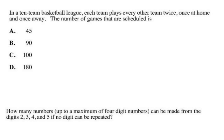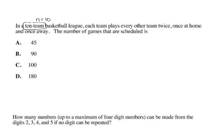A 10-team basketball league where each team plays every other team twice. How many distinct objects do we have? There are 10 teams, so N is 10. Each team plays every other team twice — once at home and once away. How many slots to fill? Two. R is 2.